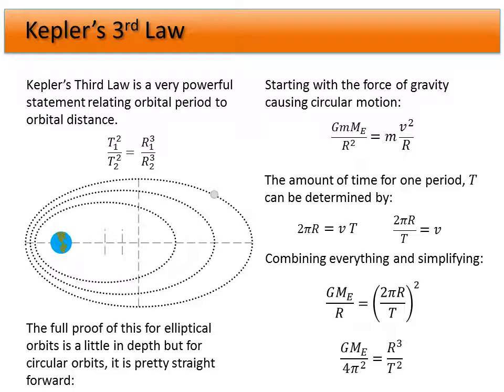For example, comparing Jupiter and Earth both orbiting the Sun is fine. But comparing the Moon orbiting the Earth with Jupiter orbiting the Sun is not valid, because the central mass is different. The equation was derived for a specific central mass, so the two orbiting objects must be orbiting the same third object.